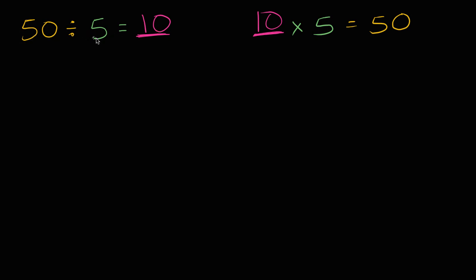Hopefully you see the relationship here. 50 divided by 5 is 10, then 10 times 5 is 50. And you could do it the other way around. What is 50 divided by 10 going to be? 50 divided by 10, well, that's going to be equal to 5. How do I know that? Well, 5 times 10 is equal to 50.